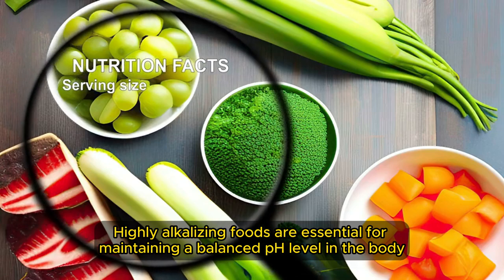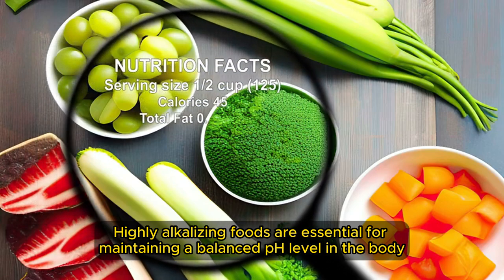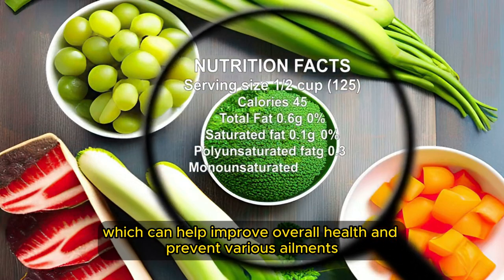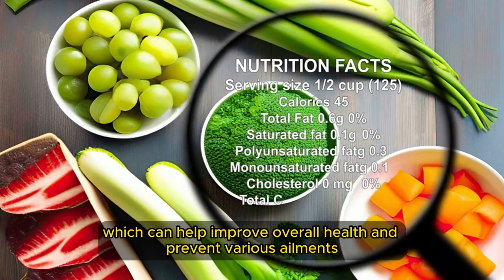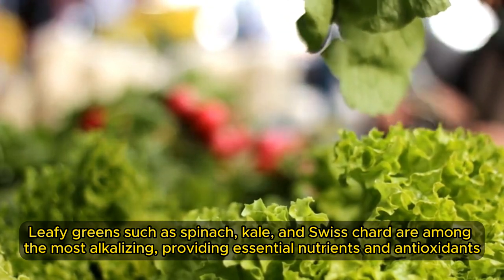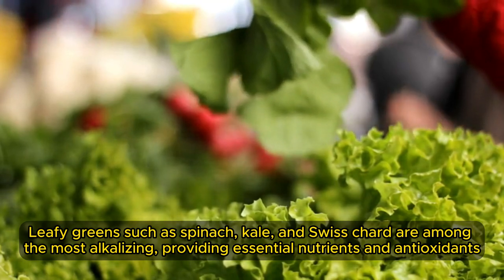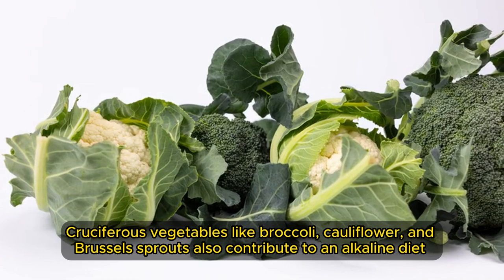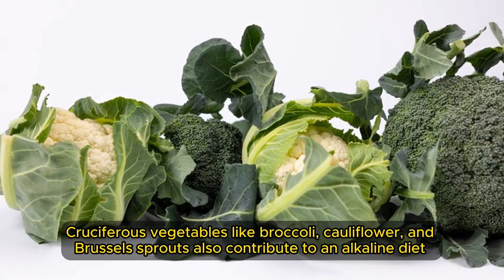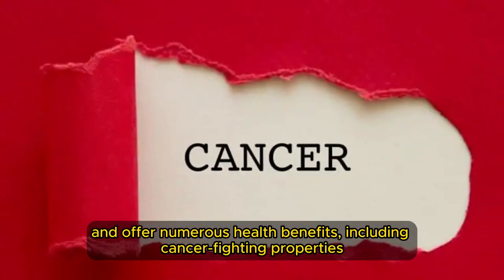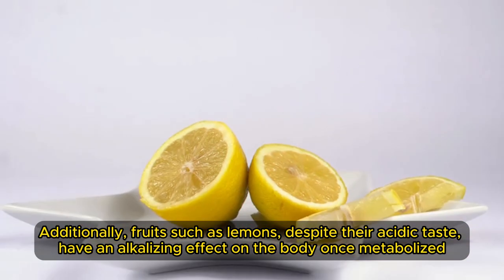Highly alkalizing foods are essential for maintaining a balanced pH level in the body, which can help improve overall health and prevent various ailments. Leafy greens such as spinach, kale, and Swiss chard are among the most alkalizing, providing essential nutrients and antioxidants. Cruciferous vegetables like broccoli, cauliflower, and Brussels sprouts also contribute to an alkaline diet and offer numerous health benefits, including cancer-fighting properties.